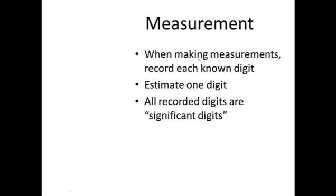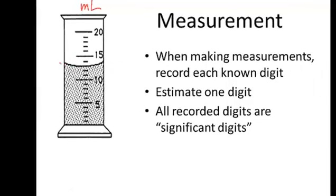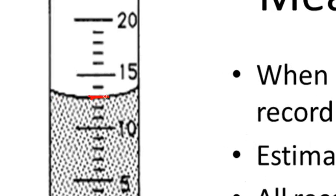Now in measurement, we record each digit that we know, and we estimate one. Let me show you what I mean by this. Here is a device that is measuring liquid, and this is measured in milliliters. So the liquid that we're looking at, we're going to measure the bottom of the meniscus, which the meniscus is here. Notice how it curves up a little bit. Water does this. We always read the bottom.